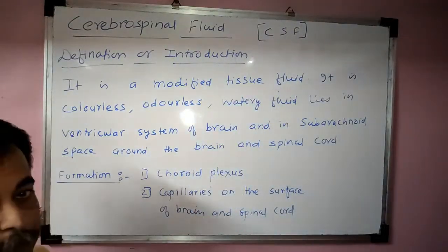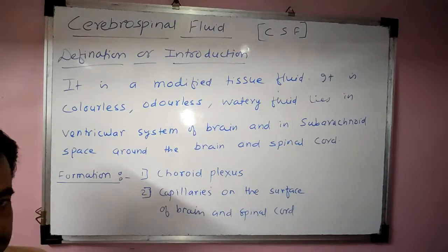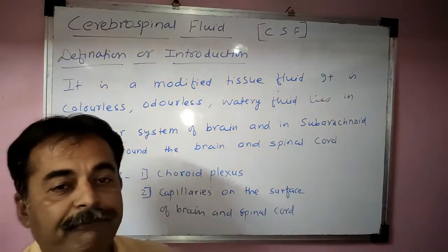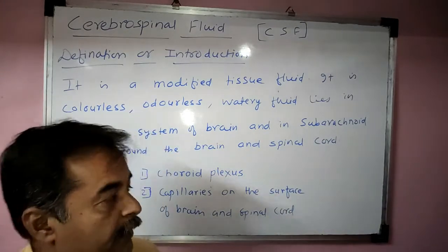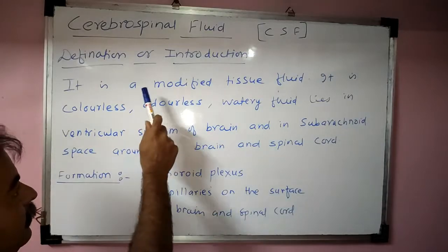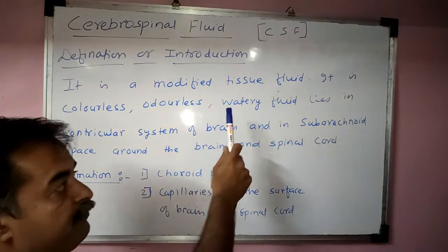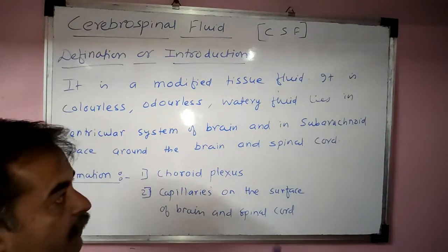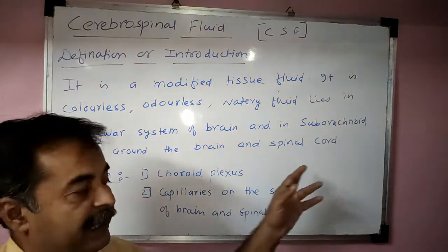Our topic is cerebrospinal fluid, also called CSF. CSF is modified tissue fluid. It is a colorless, odorless, watery or transparent fluid that lies in the ventricular system of brain and subarachnoid space around the brain and spinal cord.